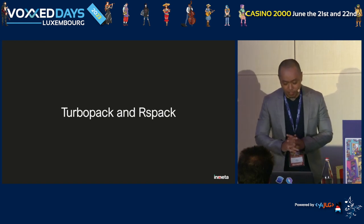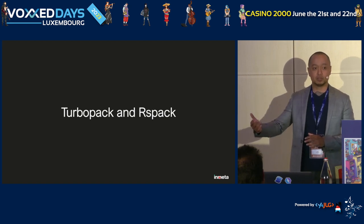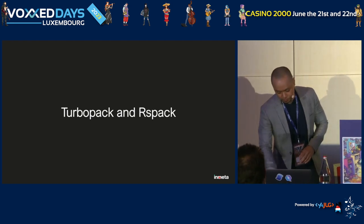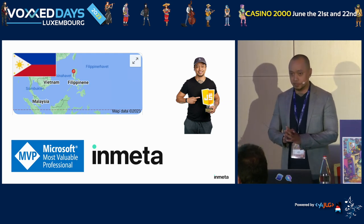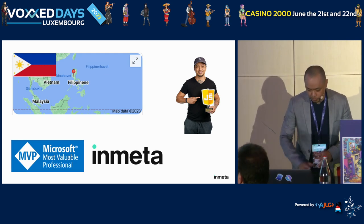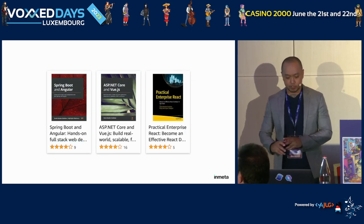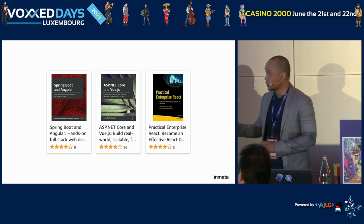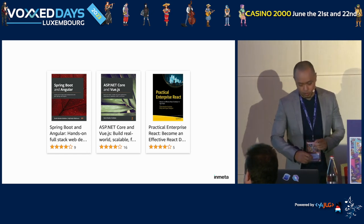This is going to be quick. The topic is about JavaScript bundlers — specifically two bundlers written in Rust. A little bit about me: I'm Devlin Dulau, currently living and working in Oslo, Norway for four years, originally from Manila, Philippines. I'm a Microsoft MVP and I've written some books: my first book ASP.NET Core with Vue.js, my second co-written book Practical Enterprise React, and my latest book launched last October — Spring Boot and Angular.